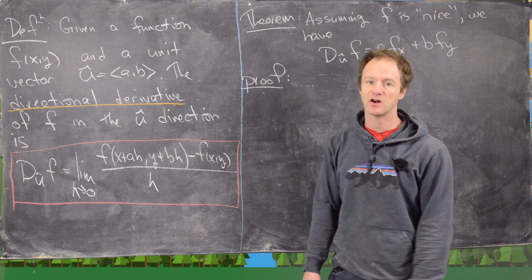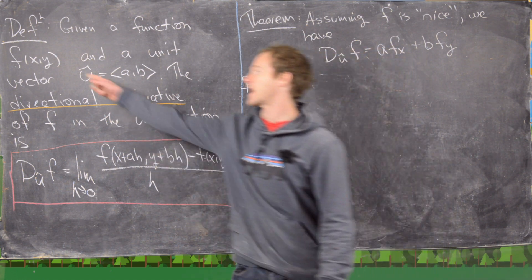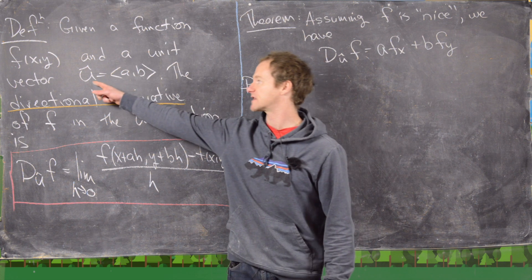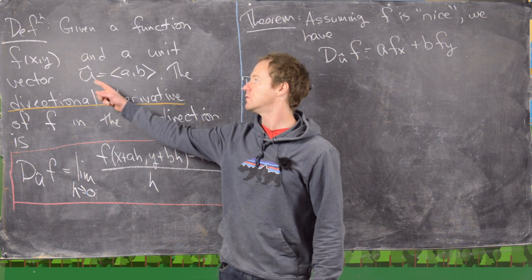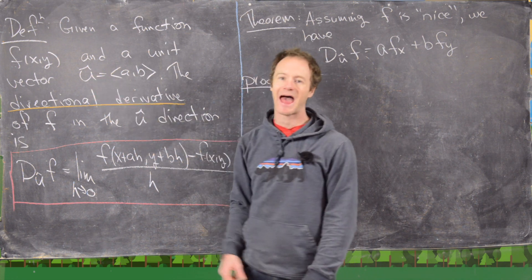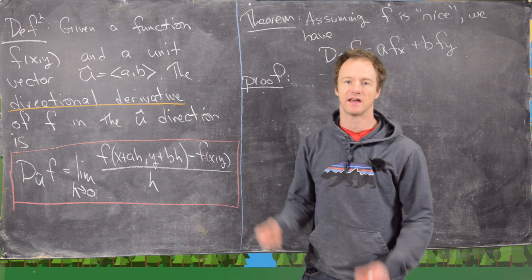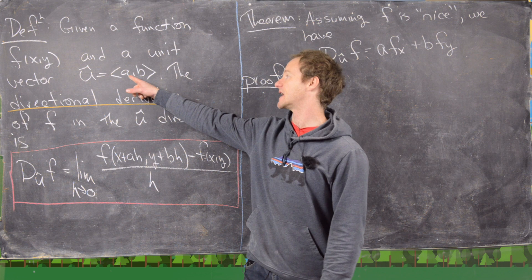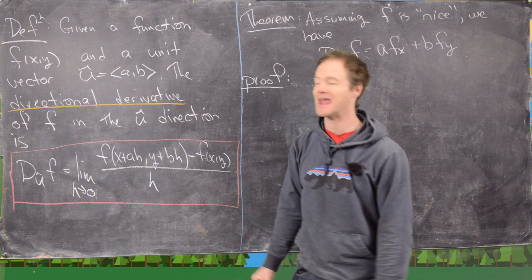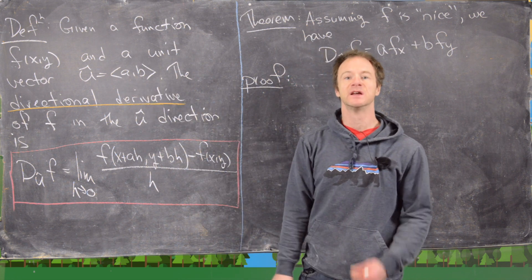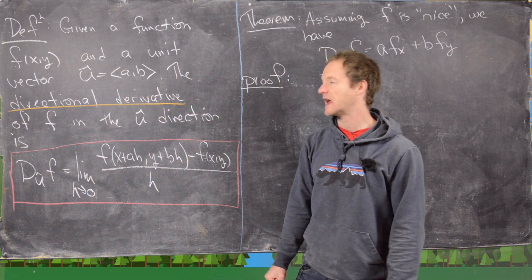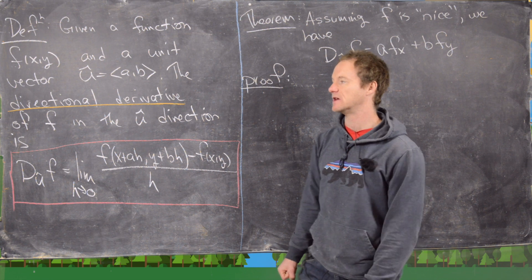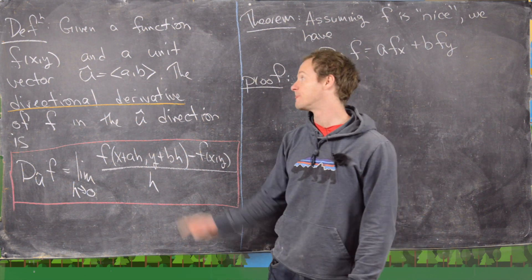We've got a function f of xy, so it's a function of two variables, and a unit vector u — we put a hat over it to indicate it's a unit vector — with components a and b. Notice we need a squared plus b squared equals one; that's what it means to be a unit vector.